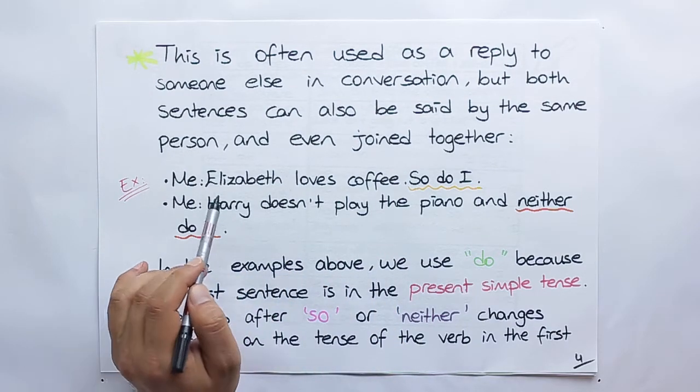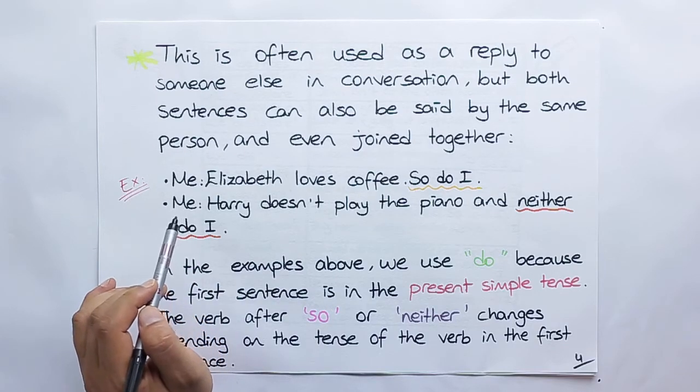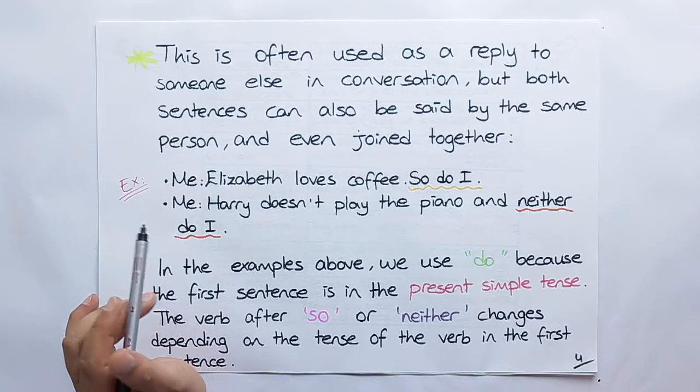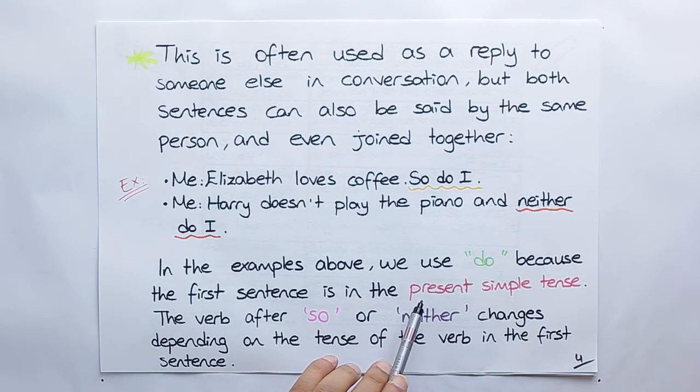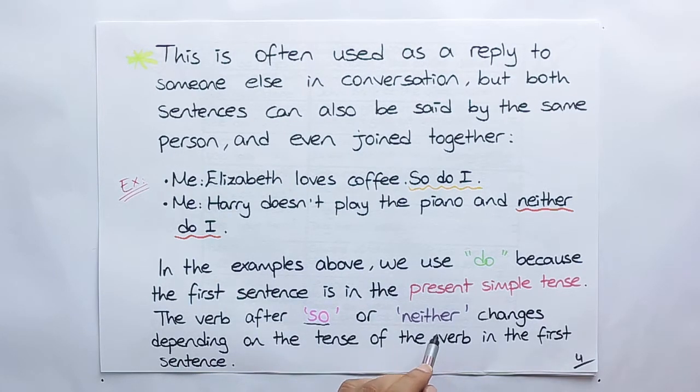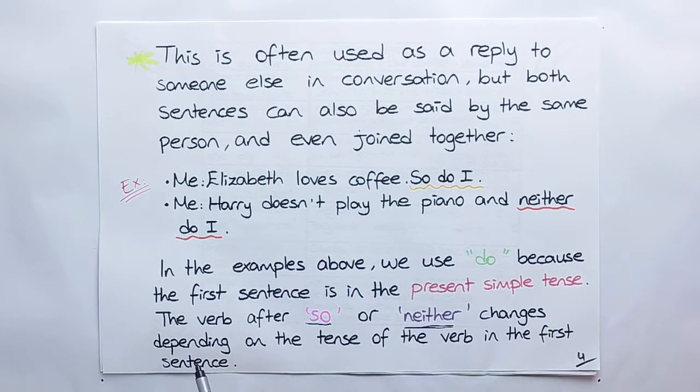You can also use these expressions while you are talking by yourself. In the examples above, we use do because the first sentence is in the present simple tense. The verb after so or neither changes depending on the tense of the verb in the first sentence.